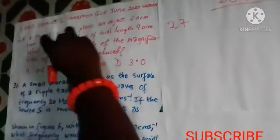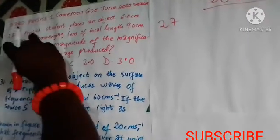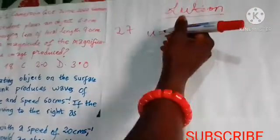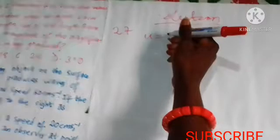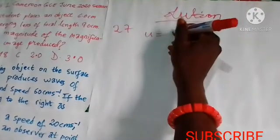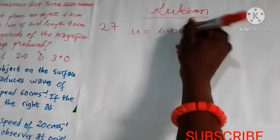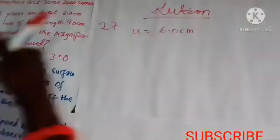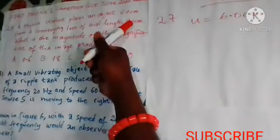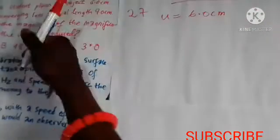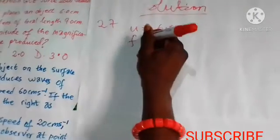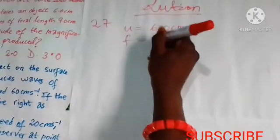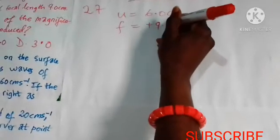Let's read it again and take down the important information. A physics student places an object 6.0 cm from a converging lens — so U, the object distance, is 6.0 cm — of focal length 9.0 cm. The focal length for a converging lens is positive, so F is equal to plus 9.0 cm.